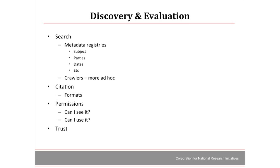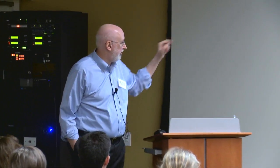In citation we have to worry about formats and also permissions — I can know about it, but can I get it? Can I see it? Which is different from: can I use it? And finally, trust — you have to believe that the citation or registry entry is telling you about something you want. This is one of the problems of understanding scientific data: there's a lot of it and a lot of different communities. You know your friends and trust them, but you don't know this person in India. What's their data? Is it a scam or is it real?